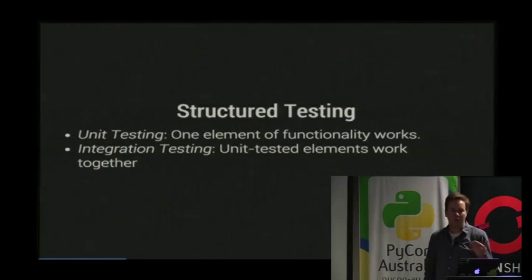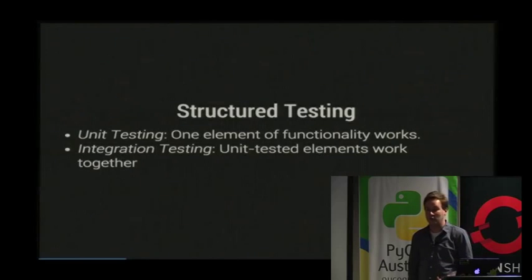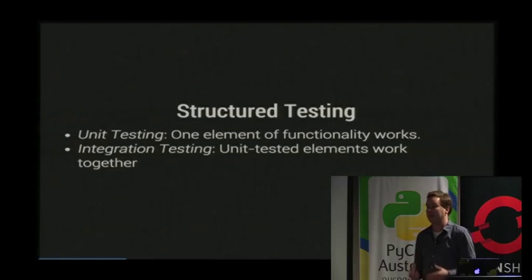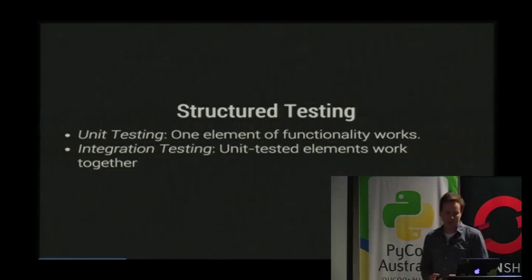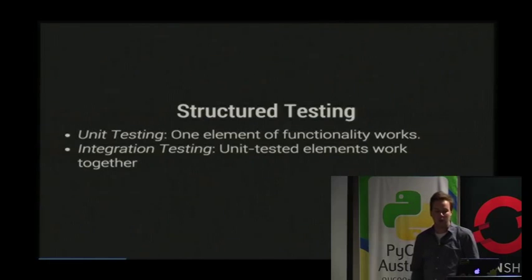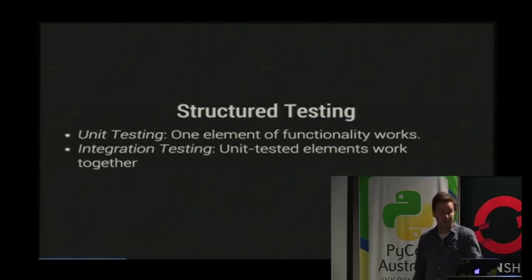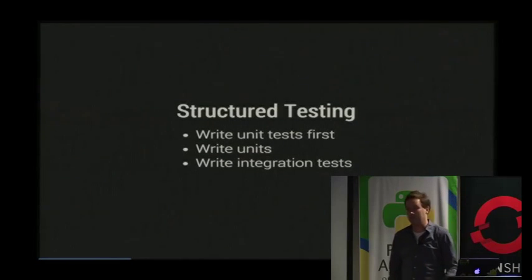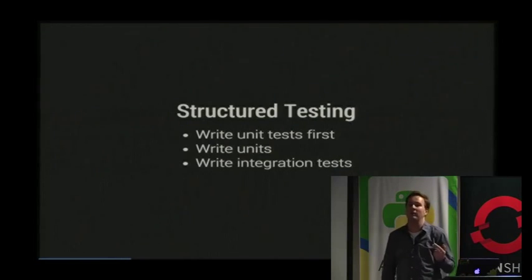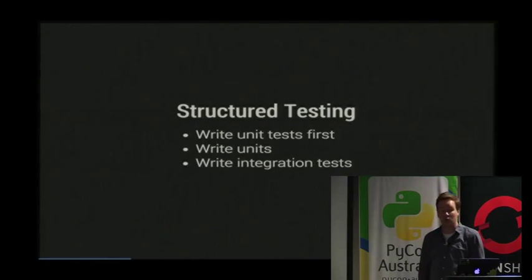There are other ways to get testing done early — making it a mandatory part of code review, or making it policy to add new test cases whenever you get bug reports. These are less prone to giving you good test coverage than proper TDD. When thinking about test-driven development, you produce testing in a structured fashion: you start with unit tests for small isolated parts of the system, then integration tests to verify those parts work together. You have fewer integration tests because they're slower.